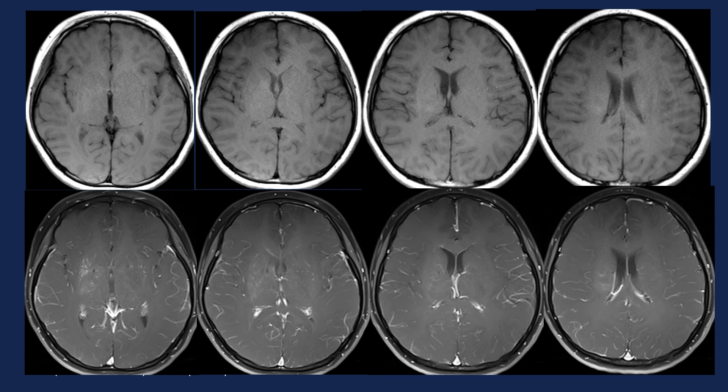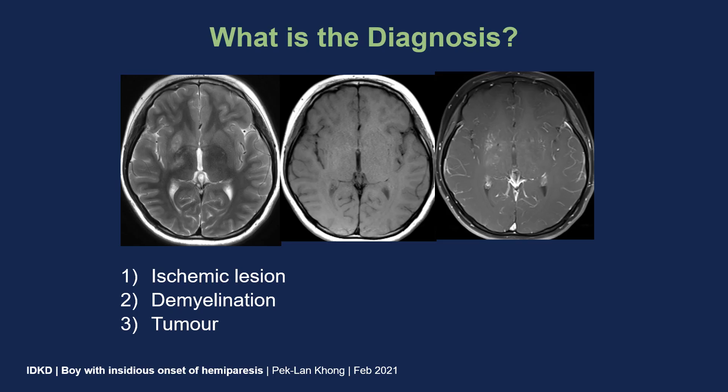No restricted diffusion was seen on DWI. At this point, what would be your differential diagnosis? Would it be an ischemic lesion, bearing in mind the Wallerian degeneration, although not acute since there was no restricted diffusion? Could it be a demyelinating lesion, for example ADEM? Or would you consider a tumor, and if so, what type? Bear in mind that there was no mass effect and no significant contrast enhancement.